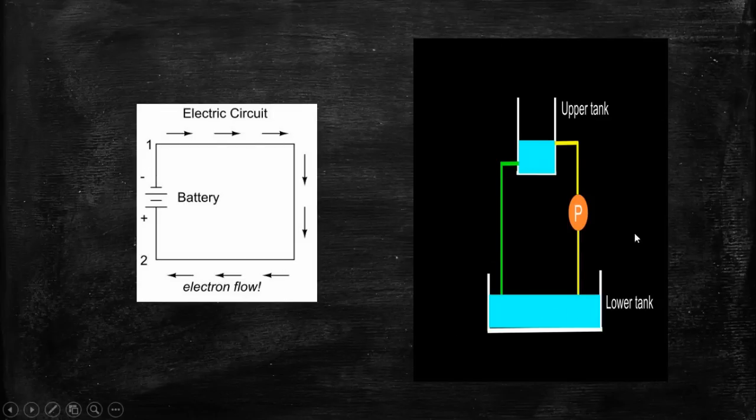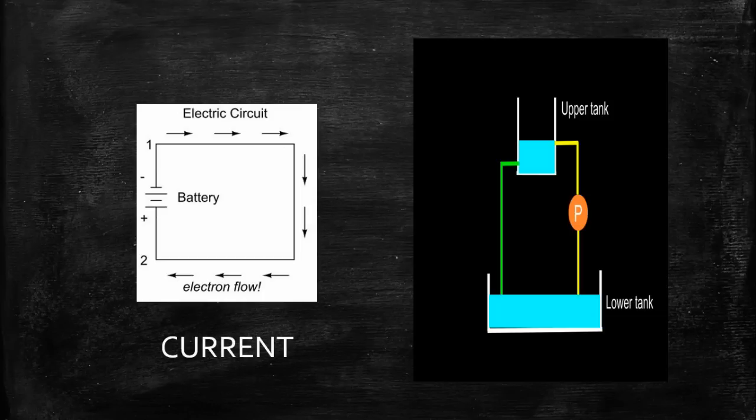As soon as we provide a path the electrons start flowing, or similarly the water starts flowing. And this continuous flow of electrons is nothing but called your current. As long as this battery keeps on pushing the electron, the electron will keep on moving in the same direction.